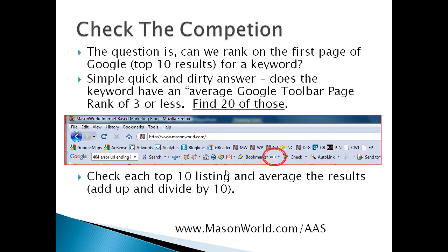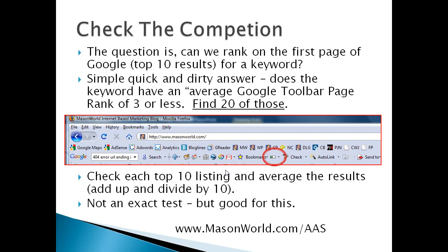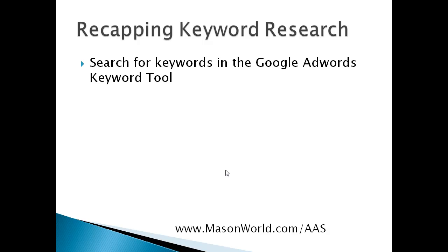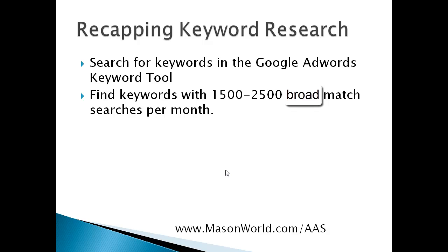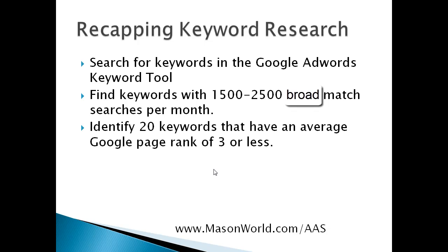Check each of the top 10 listings and average the results — that means add up all the Google toolbar page ranks and divide by 10. This isn't an exact test, but it's a good quick and dirty test, and that way you don't have to spend the rest of your life doing keyword research. So recapping: we search for keywords in the Google AdWords keyword tool, find lots of candidates with search volumes between 1,500 and 2,500 broad search matches a month, then identify 20 keywords that have an average Google page rank of three or less for all results returned on the first page of Google.